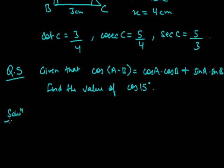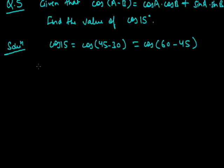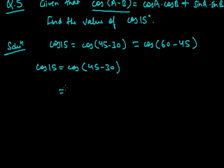We need to find out the value of cos 15°. As we have studied the trigonometry table, we have not studied the value of cos 15 directly. For finding cos 15°, we can write cos 15° = cos(45° − 30°), because we know the values of cos 45°, cos 30°, sin 45°, and sin 30°. Alternatively we could write it as cos(60° − 45°). Let's take cos 15° = cos(45° − 30°), which is in the form of cos(A − B) given in the question.